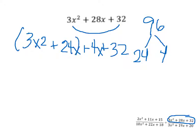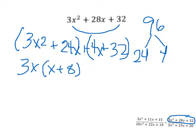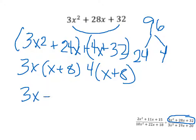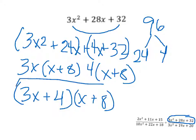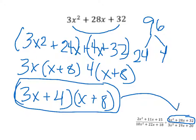Group it again with parentheses, then factor out the greatest common factor from each group: 3x from the first group gives (x + 8), and 4 from the second group also gives (x + 8). So the factored form is (3x + 4)(x + 8), and this takes place of the second numerator.